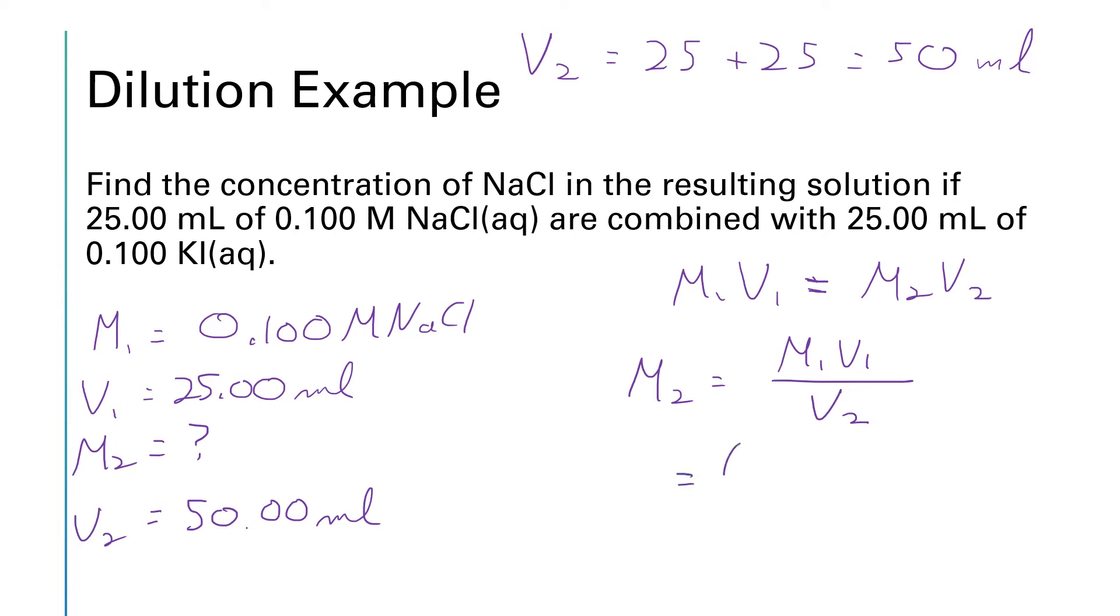So we can now plug our numbers in for m1 we have 0.1 molar. For v1 we have 25 milliliters and for v2 we have 50 milliliters. Molar stays milliliters cancel out. And so we basically have 0.1 times 25 divided by 50 which should work out to give us 0.0500 molar.